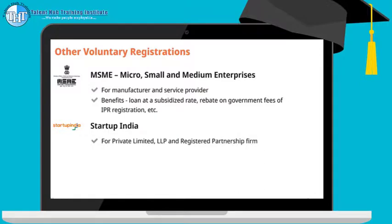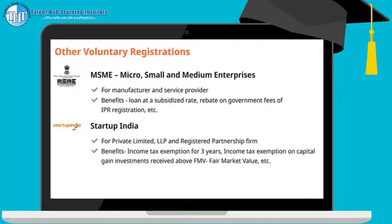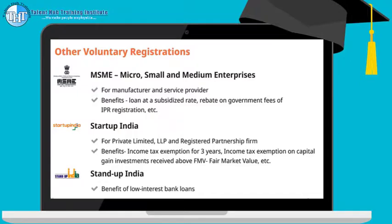Startup India: a private limited company, LLP, or registered partnership firm can get recognition under the Startup India scheme if it fulfills the specified criteria. Benefits include income tax exemption for three years on capital gains and investments received, a fast-track process, and 80% rebate in patent application fees. It can also avail alternate investment funds. Stand Up India is to facilitate Scheduled Caste, Scheduled Tribe, or women entrepreneurs by providing low-interest loans from banks. For entities other than individuals, these benefits apply only if at least 50% of shares are held by such entrepreneurs.